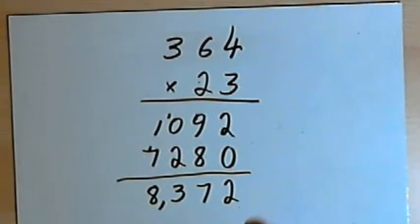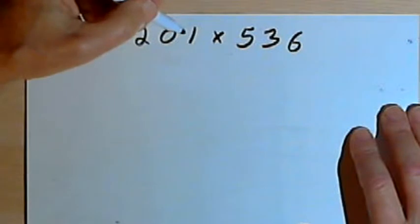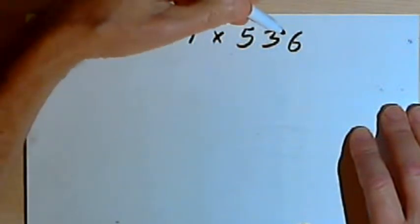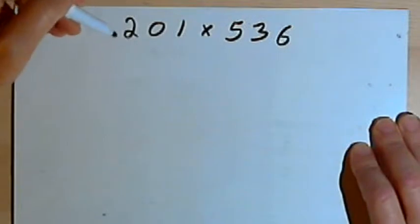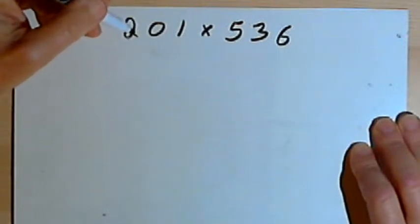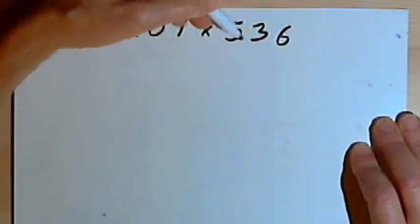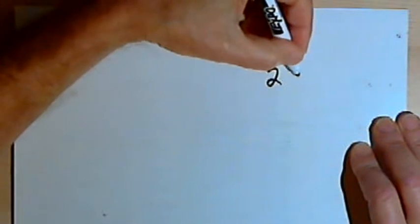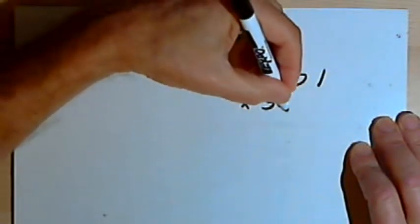Let's do one more. Here I've got two numbers to multiply, 201 and 536. I'm going to do this two ways. What I want you to see is that it doesn't matter how I set it up, it doesn't matter if I put the 201 on top or the 536. So let's start out with 201 on top, multiplied by 536.